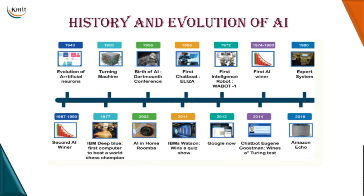When we talk about the history and evolution of AI, it didn't happen overnight. The evolution has been taking place since the 1940s. Starting with the evolution of artificial neural networks, then in the 1950s the Turing machine, the first Dartmouth conference in 1956, the first chatbot ELIZA in 1966, the first intelligent robot WABOT in 1972, and the first AI winter from 1974 to the 1980s.